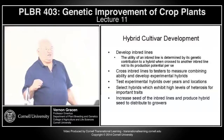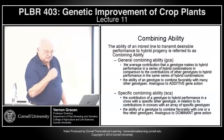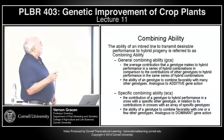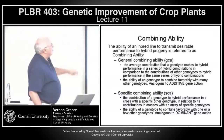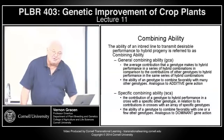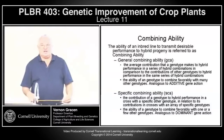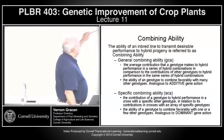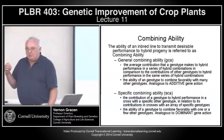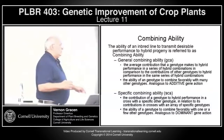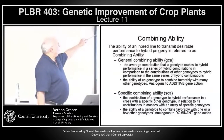Combining ability is the ability of an inbred to transmit desirable performance to hybrid progeny. We talk about general combinability or specific combinability. General combining ability (GCA) is the contribution that an inbred makes across a series of different inbreds — if one inbred combines well with lots of other inbreds, it has good general combinability. A lot of the genetic variance that goes into GCA is analogous to additive gene action, so methods used to select and increase additive genetic variance work well for GCA.